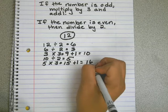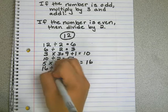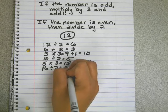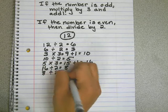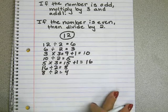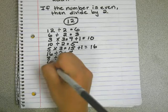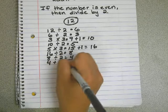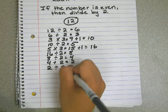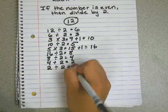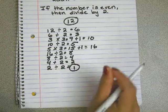Sixteen is even, so we divide by two and get eight. Eight is even, we divide by two and get four. Four is even, we divide by two and get two. Two is even, we divide by two and finally get one.